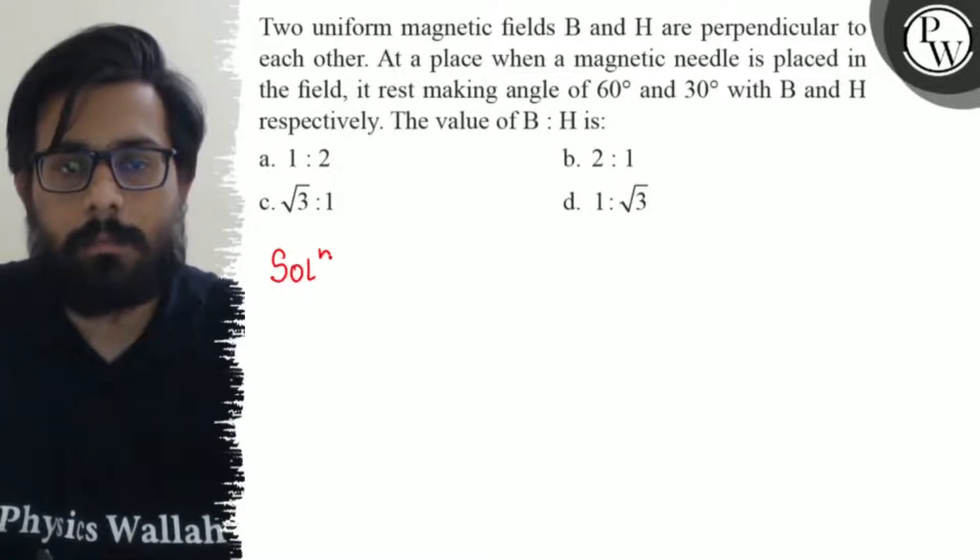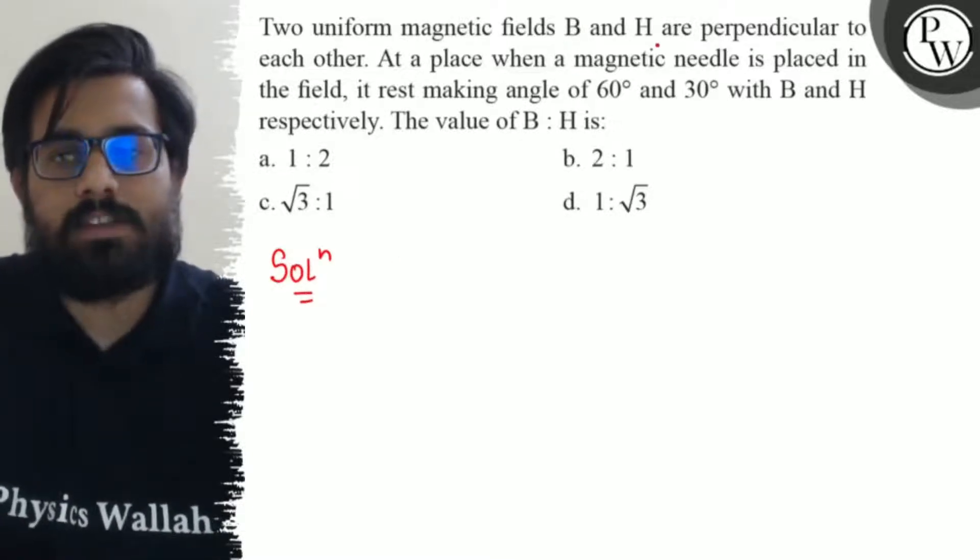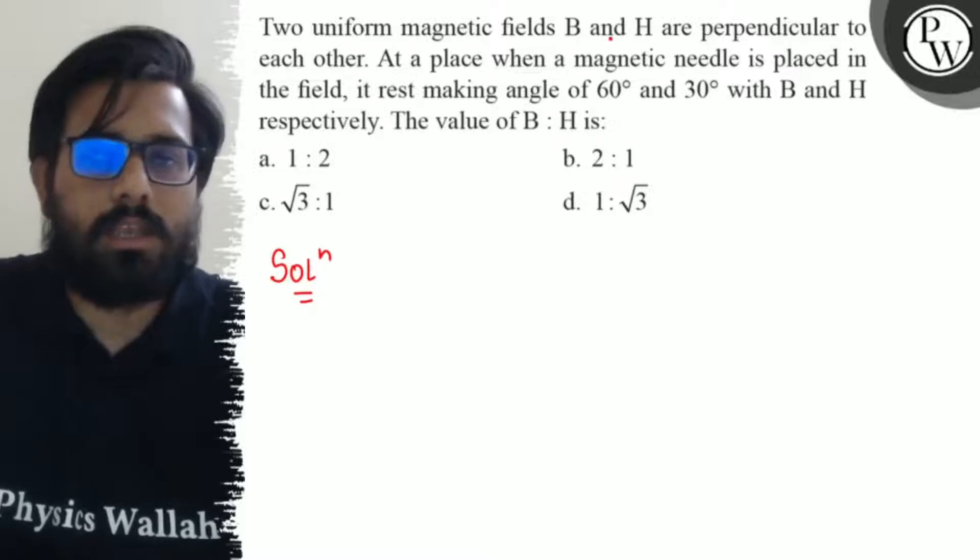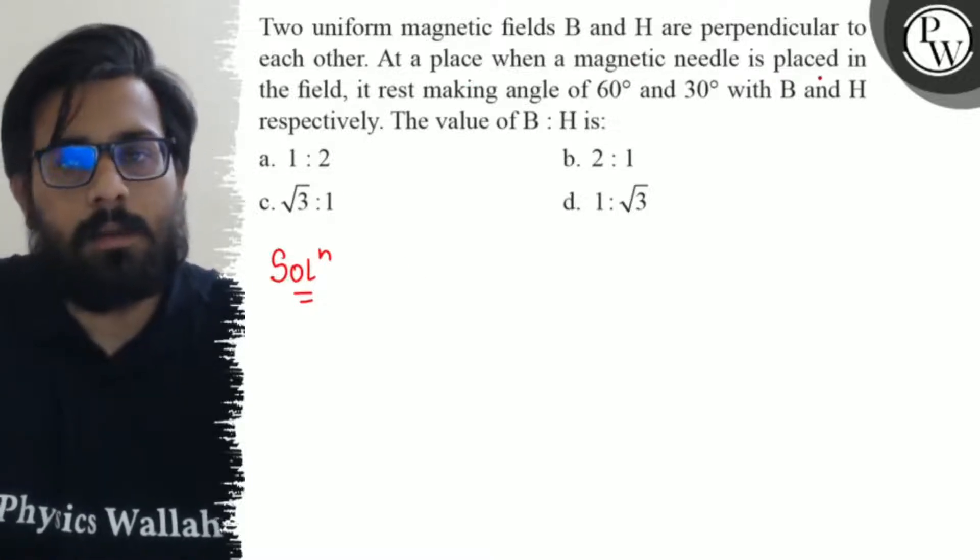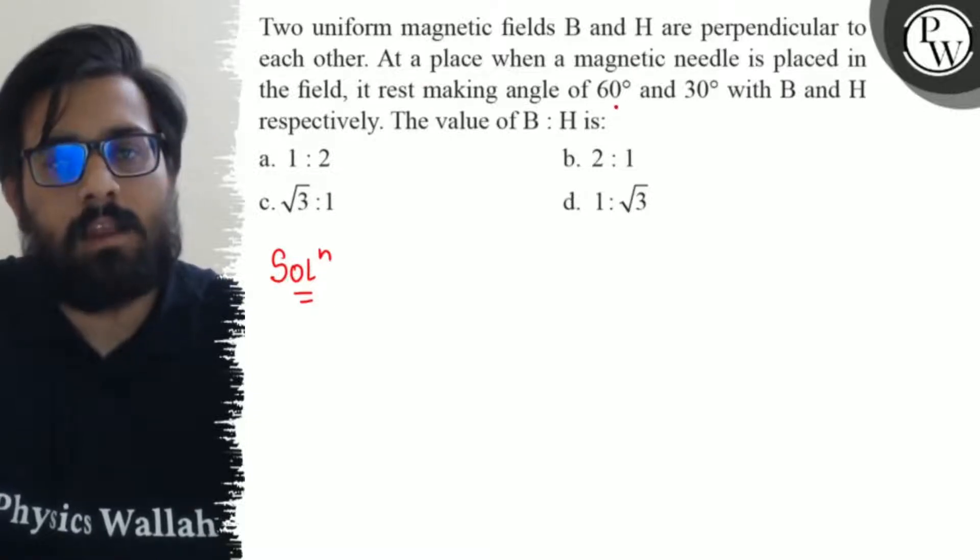Here in this question, it says that B and H are perpendicular to each other. At a place the magnetic needle is placed in the field, it makes an angle of 60 degree with the B.